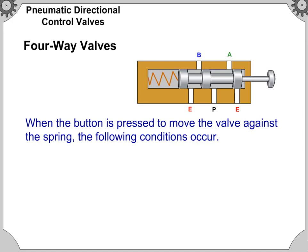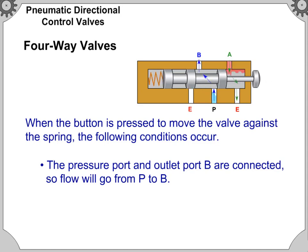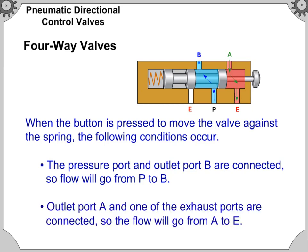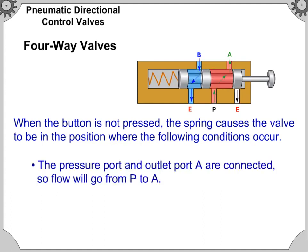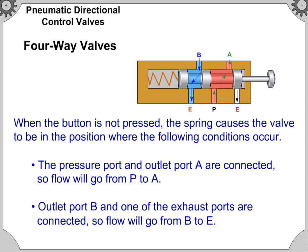When the button is pressed to move the valve against the spring, the following conditions occur: the pressure port and outlet port B are connected so flow will go from P to B, and outlet port A and one of the exhaust ports are connected so flow will go from A to E. When the button is not pressed, the spring causes the valve to be in the position where the pressure port and outlet port A are connected so flow will go from P to A, and outlet port B and one of the exhaust ports are connected so flow will go from B to E.